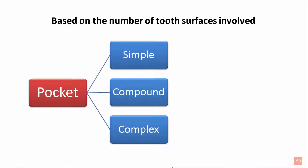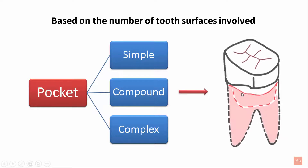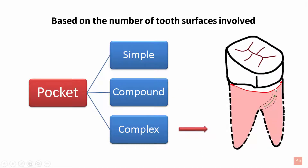Based on the number of tooth surfaces involved, pockets can be classified as simple, compound, or complex. A simple pocket involves only one surface of the tooth. A compound pocket can involve more than two surfaces of the tooth. In this image you can see that the buccal surface as well as the mesial surface is involved, so two or more surfaces involved is called a compound pocket. In a complex periodontal pocket, it begins from one surface of the tooth, twisting around the tooth surface involving one or more tooth surfaces, and it ends mostly around the furcation areas.